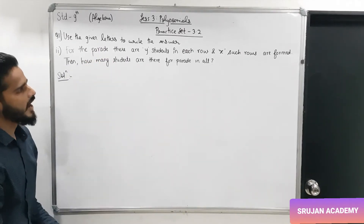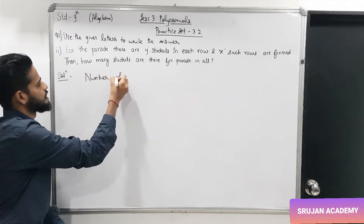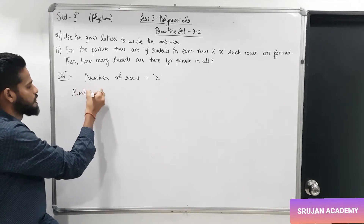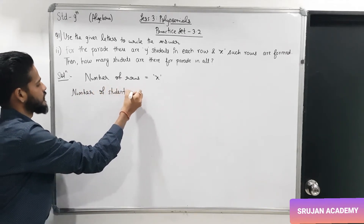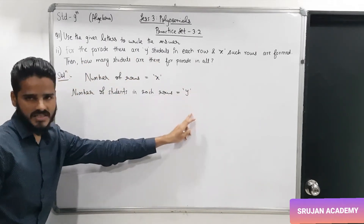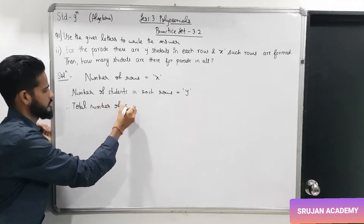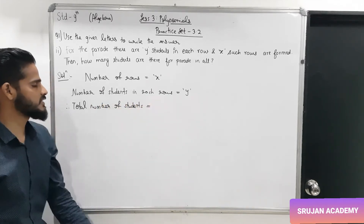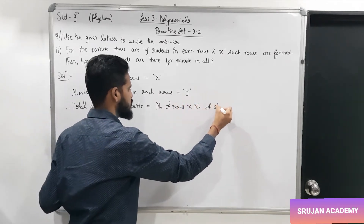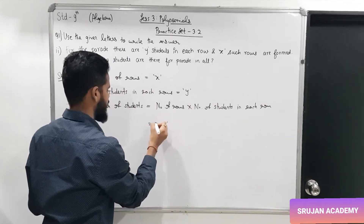Second sub-question: for the parade, there are y students in each row and x such rows. Number of rows is x, and number of students in each row is y. So the total number of students will be number of rows into number of students in each row, which is x into y.